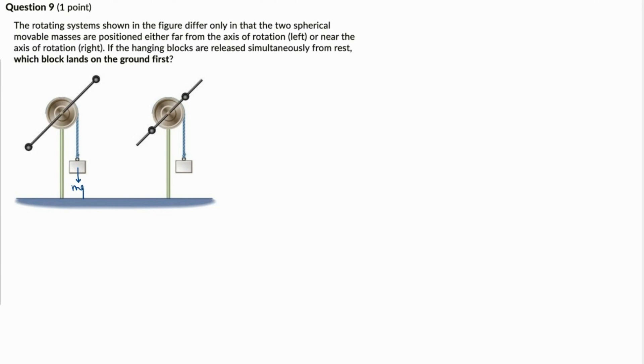Since the mass of the hanging block is the same, this will be the weight, and this will be the weight over here as well. This is the required tension. Since the arrangement is the same, the tension is also going to be the same. So let's find out the torque now.